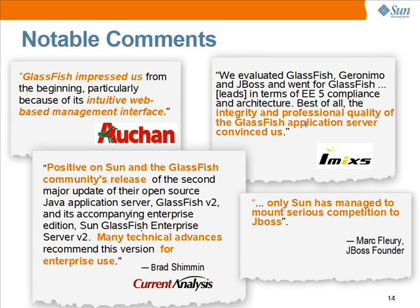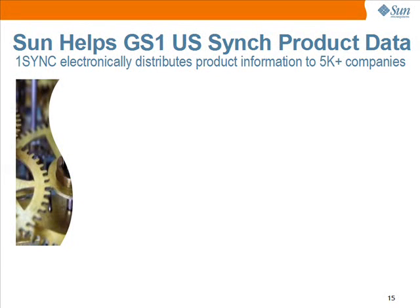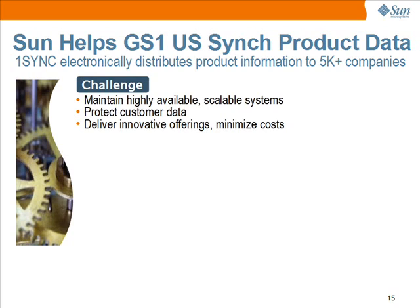Let's talk about a real customer example using Glassfish. OneSync helps more than 5,000 companies, many of which are ranked in the top Fortune 50, electronically distribute up-to-date product information to organizations in their supply chain. A non-profit subsidiary of GS1US with only 250 employees, OneSync synchronizes information using an electronic data pool certified by the Global Data Synchronization Network. The OneSync data pool manages more than 85% of traffic on the GDSN. Their business issues included the requirements to maintain highly available and scalable systems, protect customer data, and deliver innovative offerings with minimized cost.